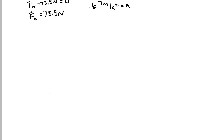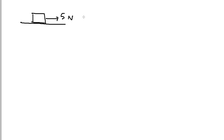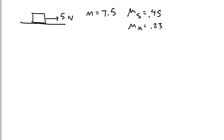Now let's use the same box — still pulling with 5 Newtons, mass is 7.5 kg — but now the coefficient of static friction is 0.45 and the coefficient of kinetic friction is 0.23. Since I'm pulling in one direction, the frictional force is directed in the opposite direction. Since I don't say I'm pulling at constant speed, we don't yet know whether the friction is static or kinetic.